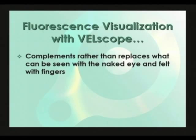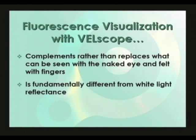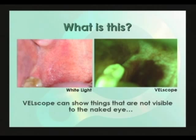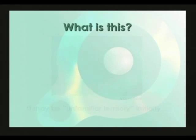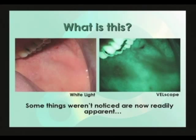Fluorescence visualization with VELscope shows you completely new visual information that is fundamentally different from what you see when you look at reflected light, be it from a white or chemiluminescent light source. It has the exciting and possibly life-saving potential to show you things that were not previously visible to the naked eye. However, in showing you oral tissue in a new light, it will probably be taking you into unfamiliar territory — where things visible under white light look just plain different, or things that weren't that noticeable under white light now show up plainly.